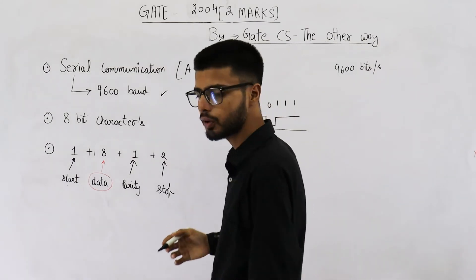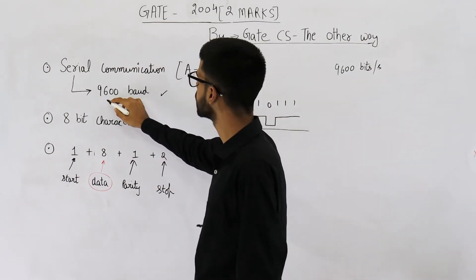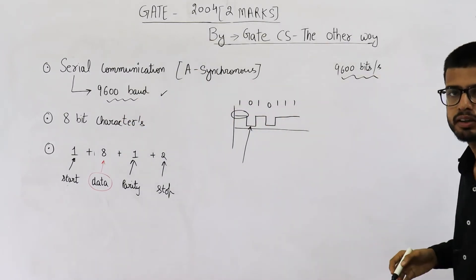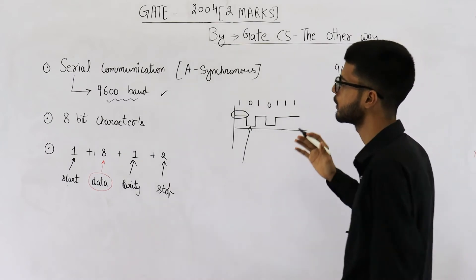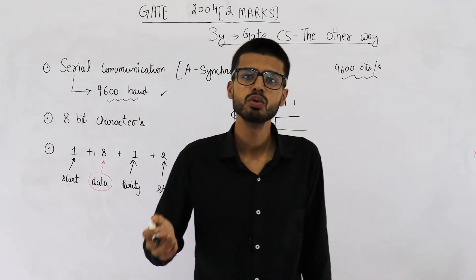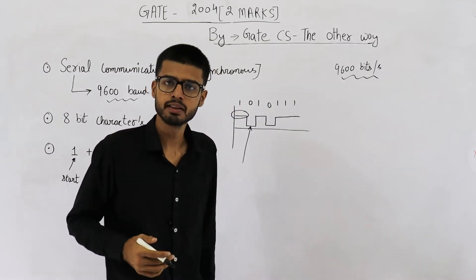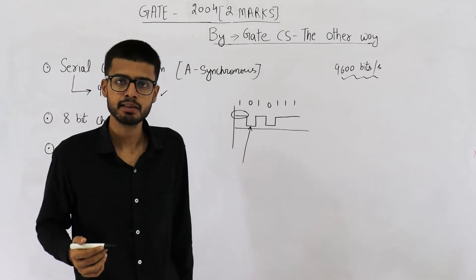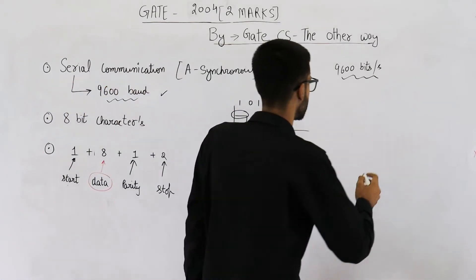Now, is it possible that baud rate and bit rate is different? Yes, it is possible because in some encoding schemes, we use two symbols or two signaling events just to send one bit. For example, Manchester encoding and differential Manchester encoding.